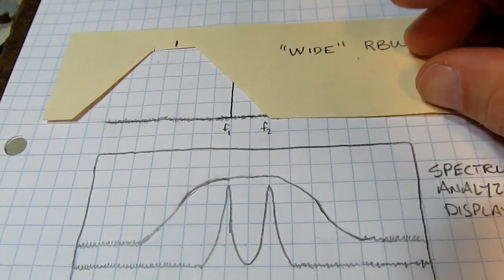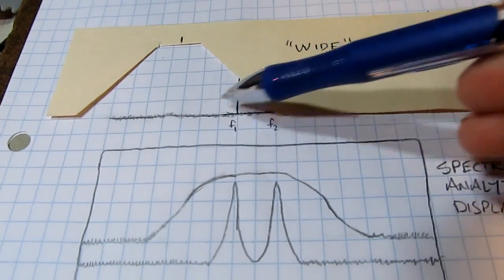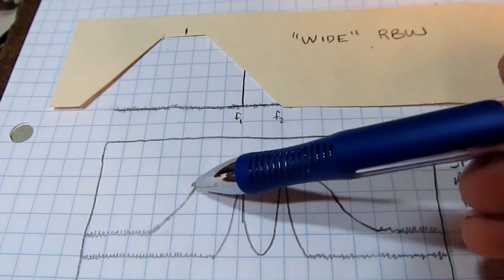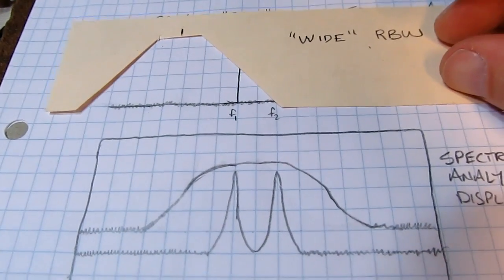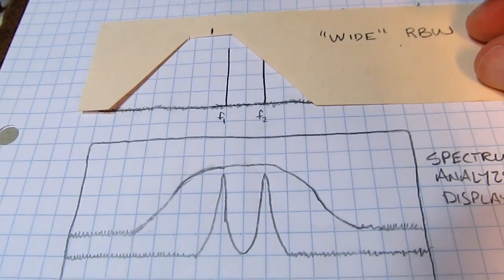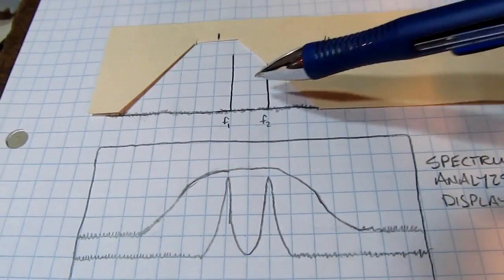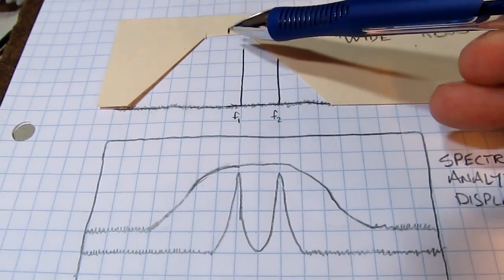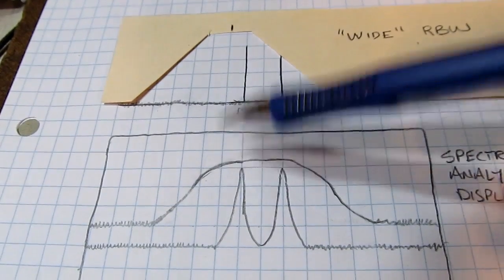As part of that first signal starts coming through, that power is being integrated in this filter and measured by the detector. And we see the power start coming up on the spectrum analyzer. As we sweep this through further we get to the point where this first tone is now fully inside the filter. We're right up about here now, looking at the center of that filter.